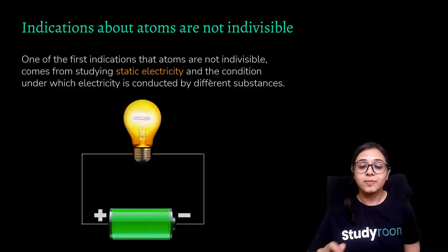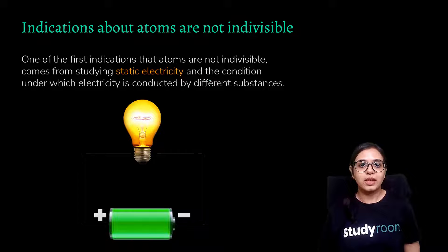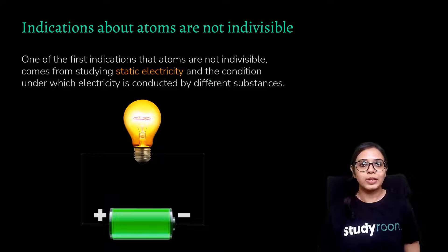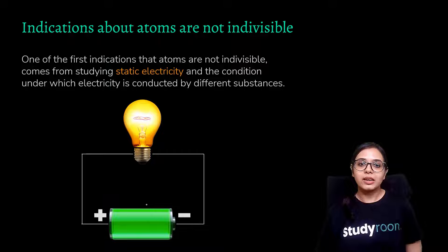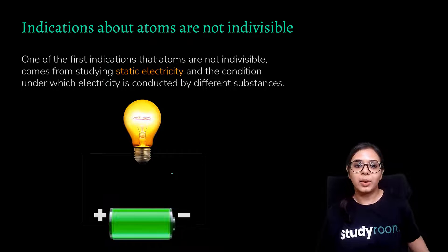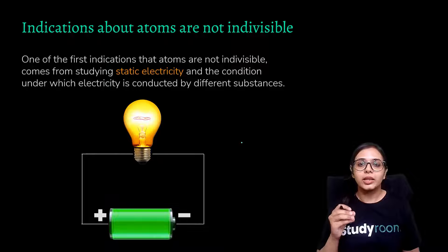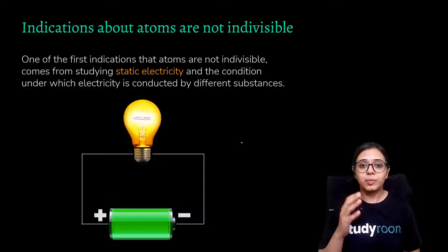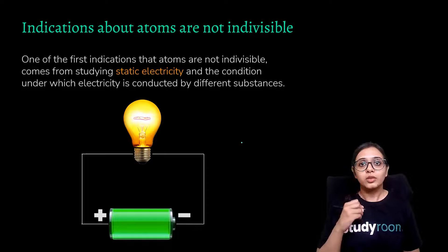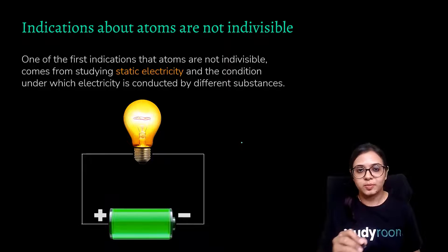One of the first indications that atoms are not indivisible comes from studying static electricity and the conditions under which electricity is conducted by different substances. By studying the conduction of electricity through elements, we can determine that atoms — the smallest particles of matter — are made up of further smaller components. It can then be concluded that atoms are divisible, not indivisible.